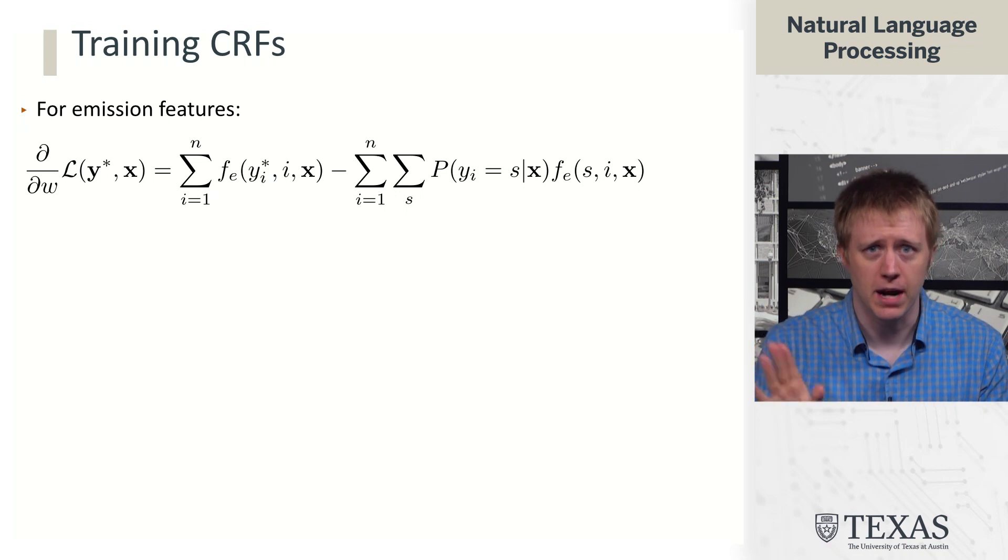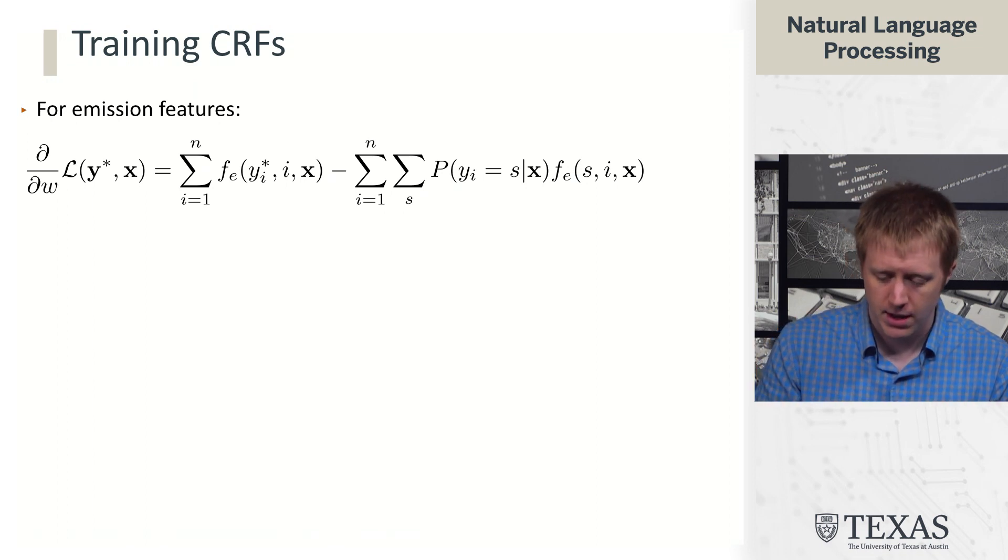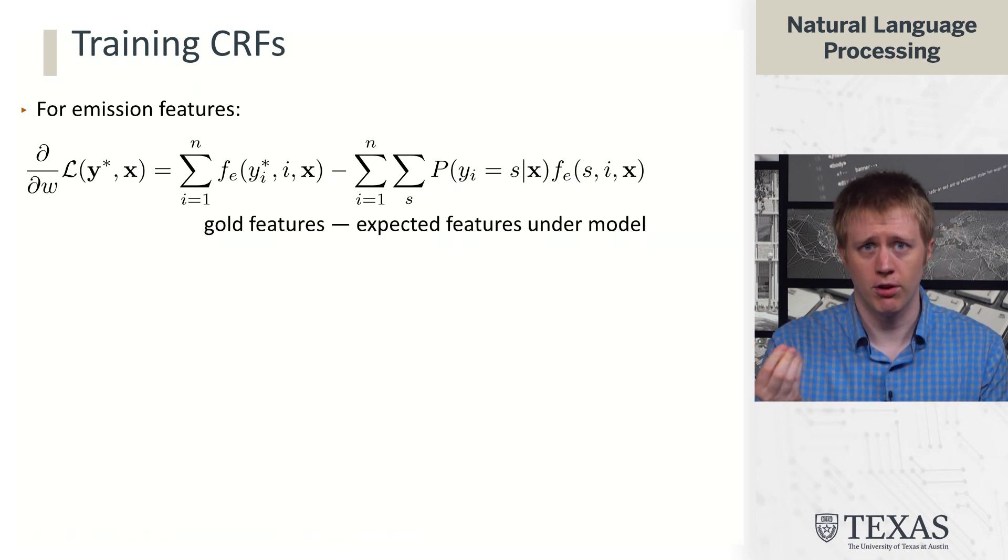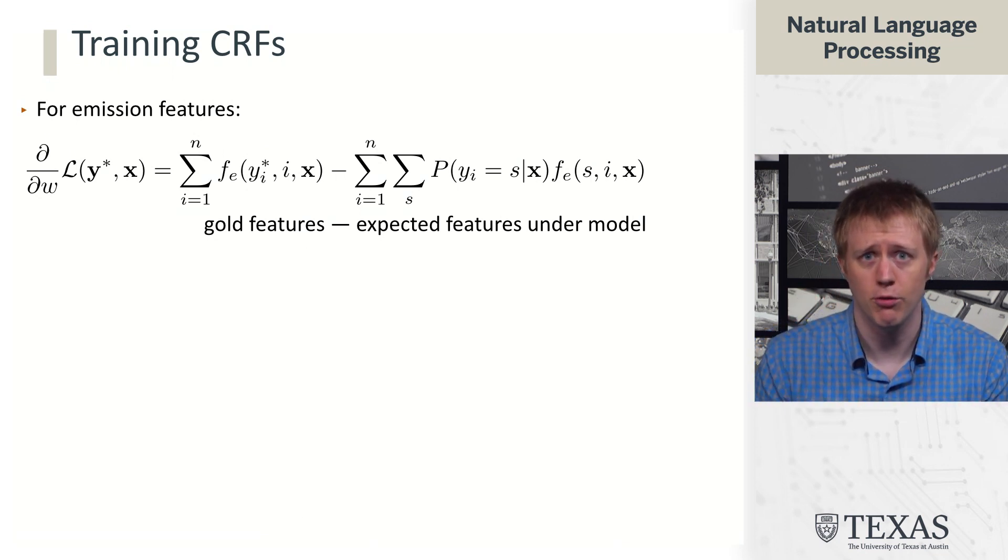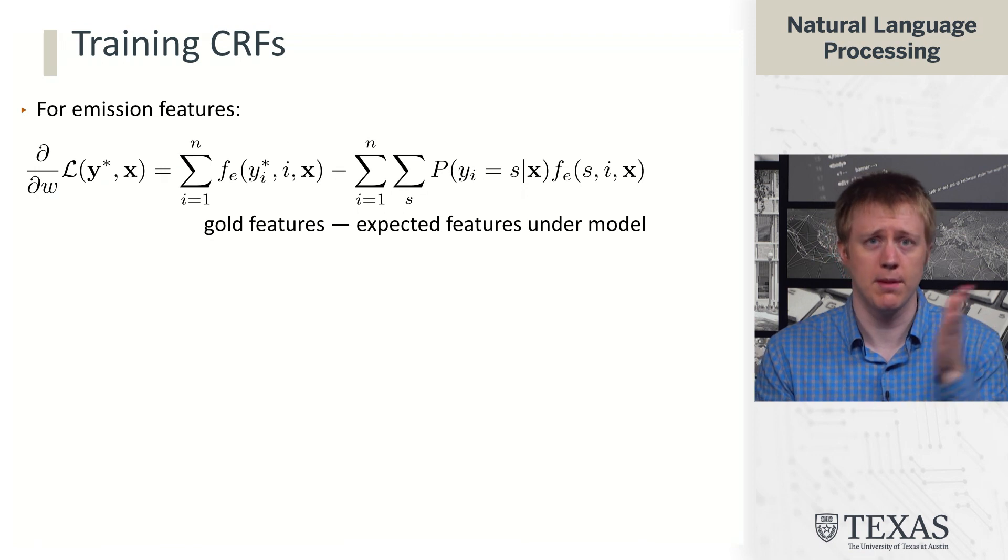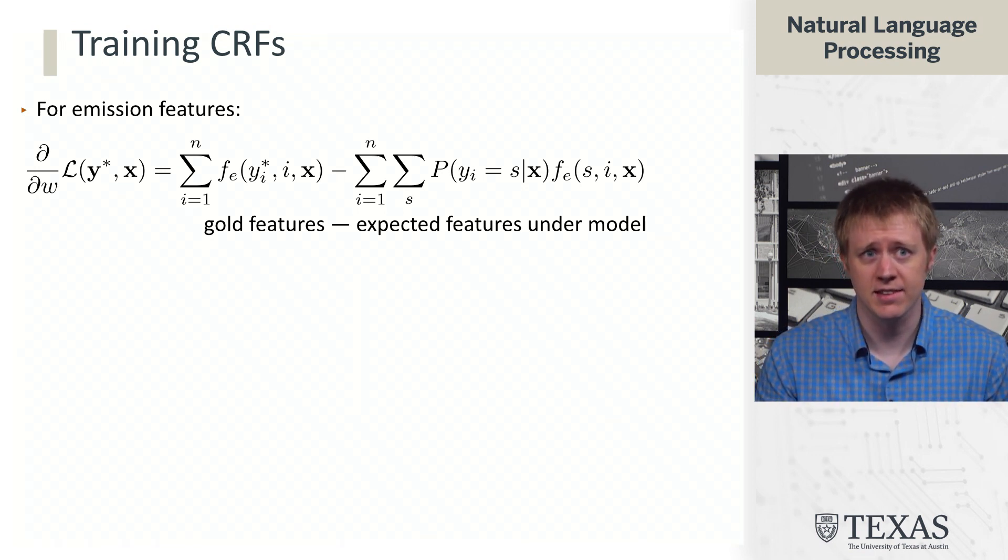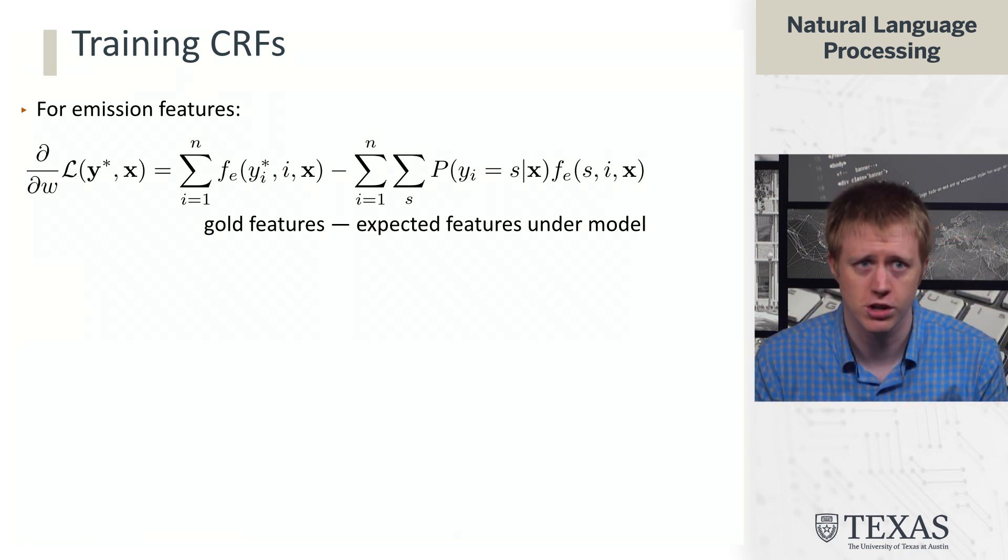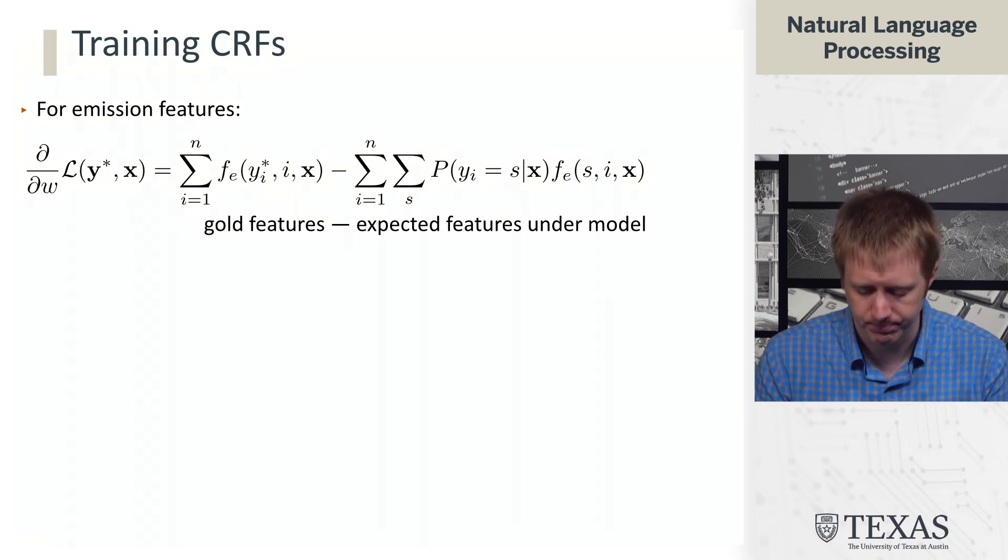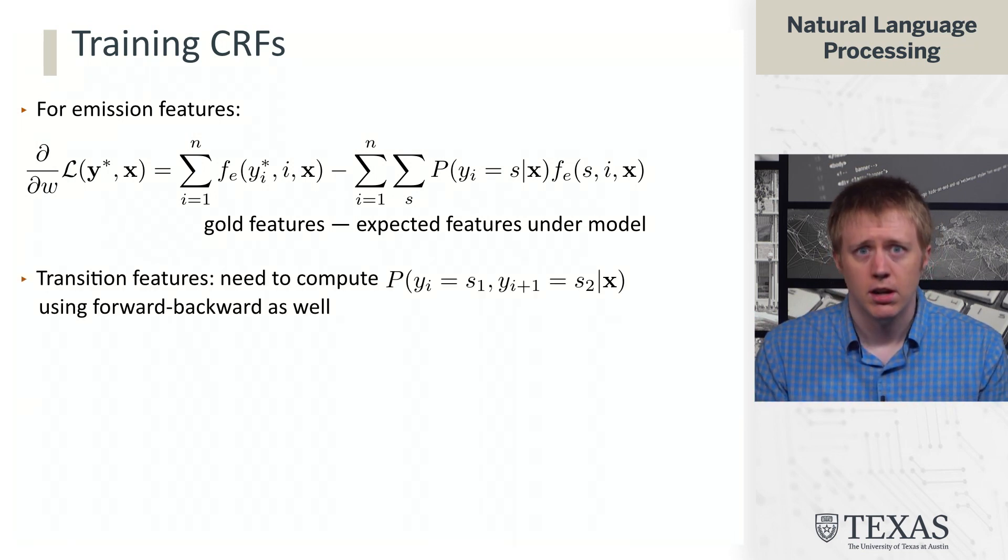But let's assume that we have this magic box, forward-backward, for computing these marginal distributions. Now we have our gradient for CRFs, which is the gold emission features minus this sum over the marginal distribution times the emission associated with that time step in that state. So the sums here are no longer scary because we're just summing over time steps i and then also over tags s. And so we're basically having to sum over like a two-dimensional chart no longer over an exponential number of things.